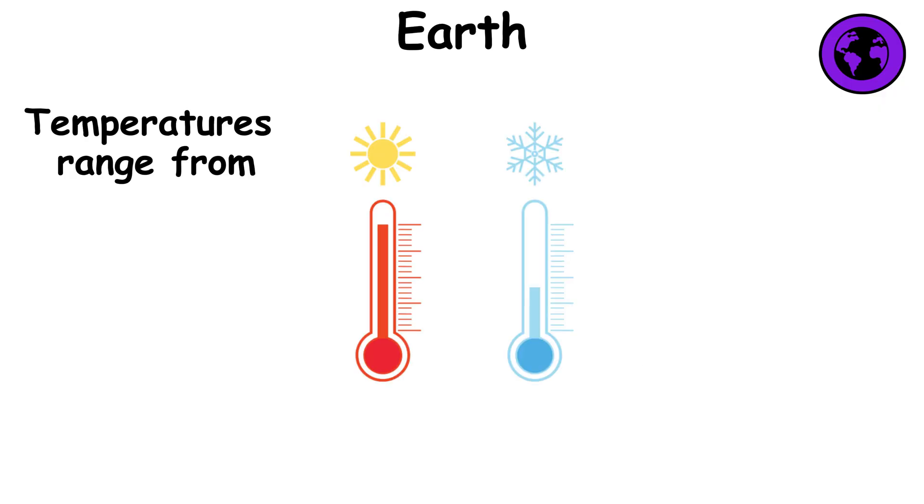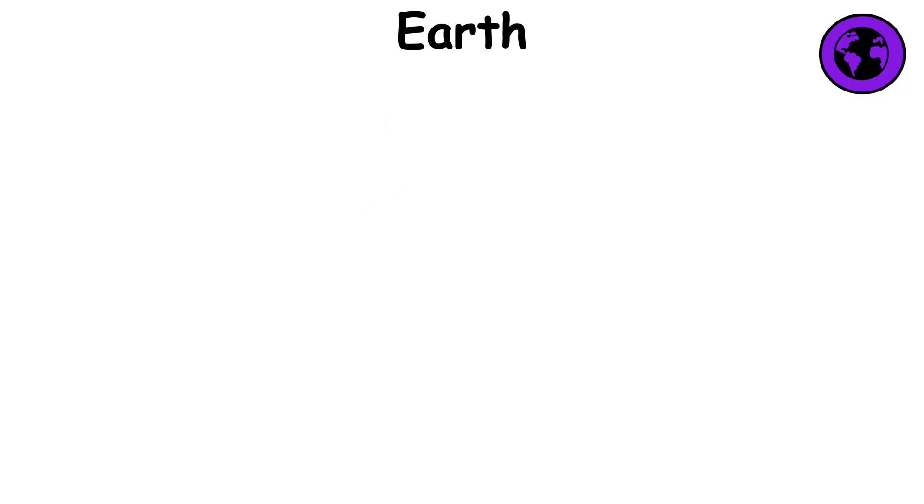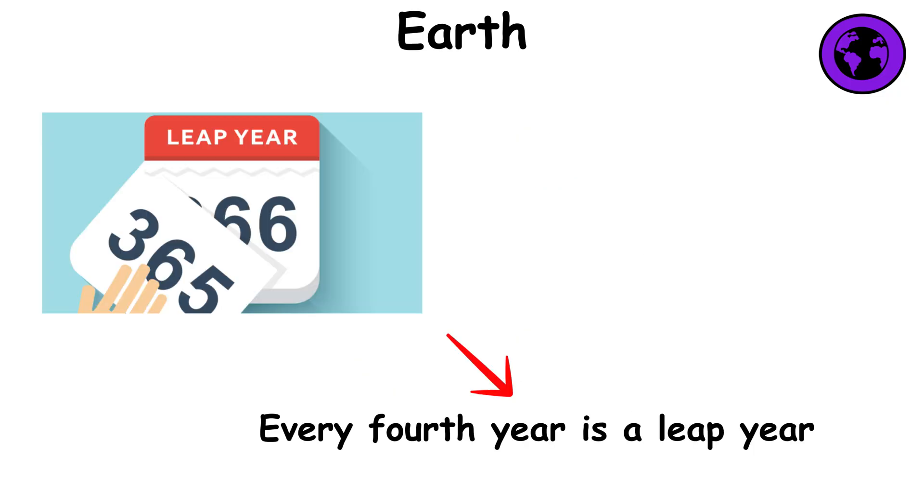Temperatures range from negative 128.6 degrees Fahrenheit to 136.4 degrees Fahrenheit in different parts of the planet. A year lasts 365.25 days, and every fourth year is a leap year.